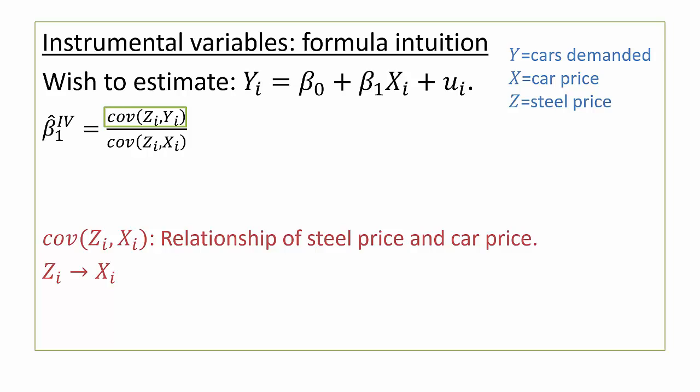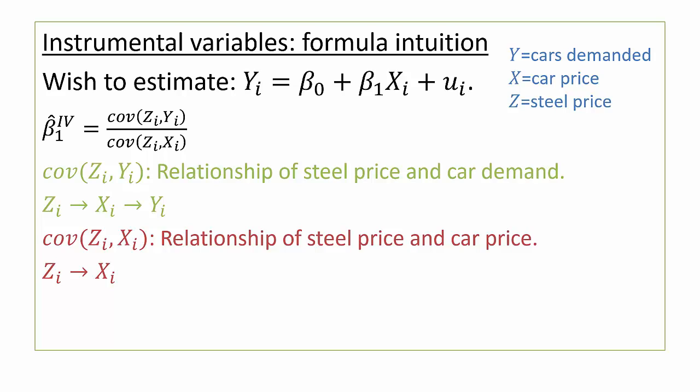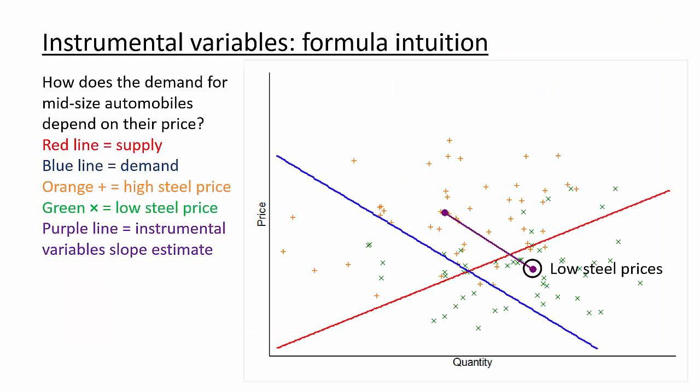Now turn to the numerator, the covariance of z and y. Why would steel price and demand for cars be related? Remember we argued that steel price should not have a direct effect on car demand, but steel prices could affect car prices, which in turn affect demand. This formula is asking us to observe what happens when steel prices increase. We should see an increase in car prices, reflected in the denominator, and a corresponding drop in demand, reflected in the numerator. The ratio of these two effects could reasonably be attributed to the direct effect of car price on car demand. We also saw this in our graph. As steel prices went from low, the green x's, to high, the orange plus signs, car prices increased and demand decreased. The ratio of those changes, the slope of the purple line connecting the low and the high steel price averages, match the demand relationship quite well.